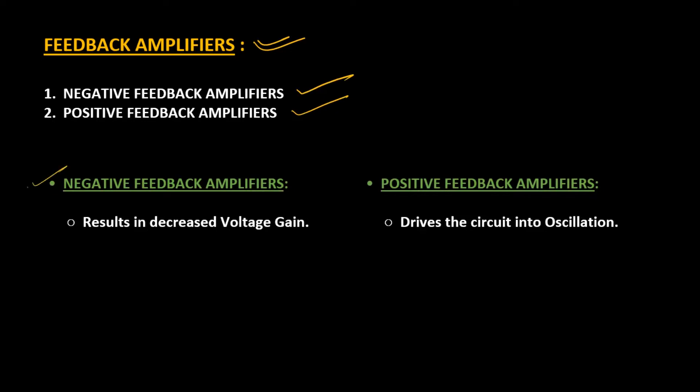Negative feedback amplifiers basically result in a decrease in voltage gain. This reduction in voltage gain actually compensates for certain features in a circuit to be improved. For positive feedback type amplifiers, it drives the circuit into oscillations. Most oscillatory circuits we know are mainly based on positive feedback circuitries or operations.